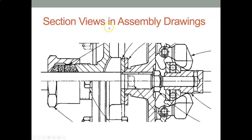Here are some examples of section views in an assembly drawing. You can see the cylindrical main shaft, and here's a thrust bearing with the ball visible. The ball is not sectioned — we don't section that.